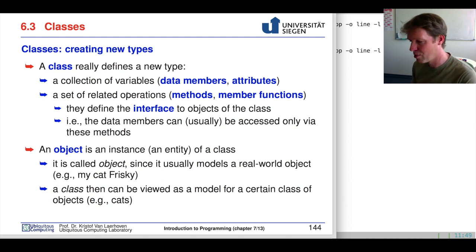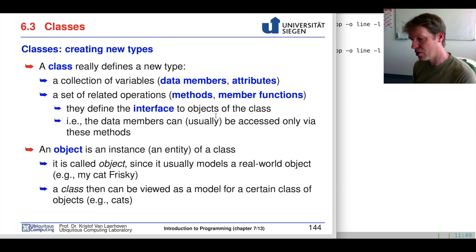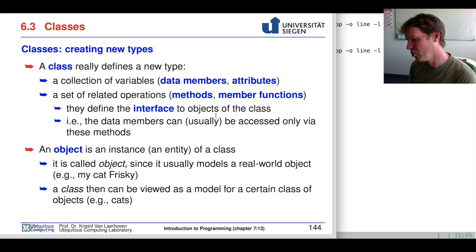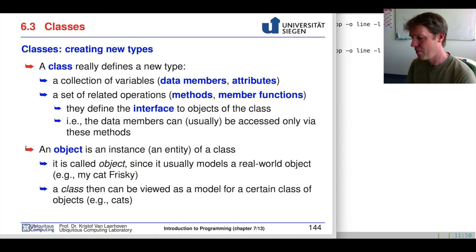We also have functions that belong to this — operations or operators in fact. These we call methods or member functions. All of this defines the interface to the object of the class. It tells us what the class is really used for and what it holds: a couple of data variables and the functions that belong to them. Once we have a class, it is a kind of blueprint, and we want to instantiate one of those classes into an object. An object is a concrete class with concrete data filled in.